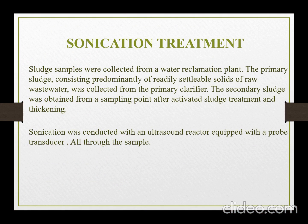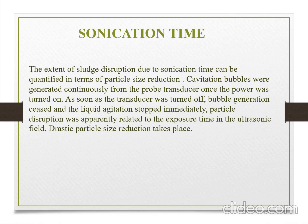Now let's see how the sonication treatment is applied over a wastewater sample. Sludge samples were collected from the water reclamation plant. The primary sludge, consisting predominantly of readily settleable solids of raw wastewater, was collected from the primary clarifier. The secondary sludge was obtained from the sampling point after the activated sludge treatment and thickening. Sonication was conducted with an ultrasound reactor equipped with a probe transducer. Sonication time is one of the most important parts of the sonication process, and the extent of sludge disruption can be quantified in terms of particle size reduction.